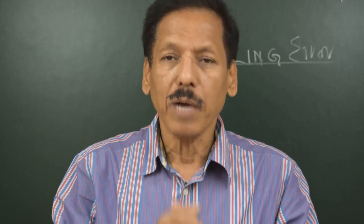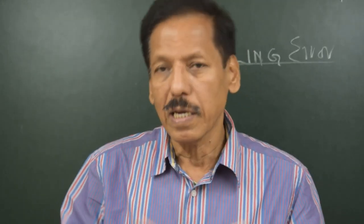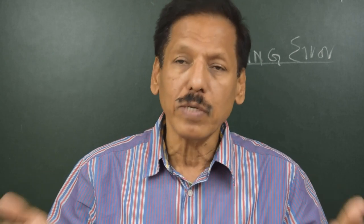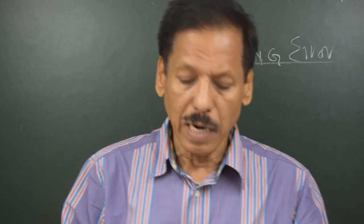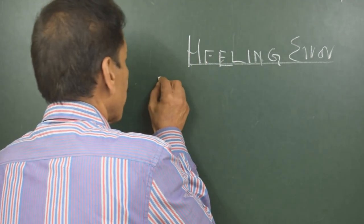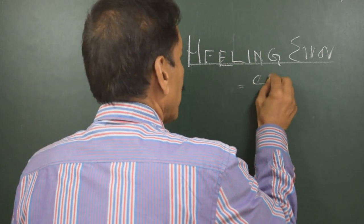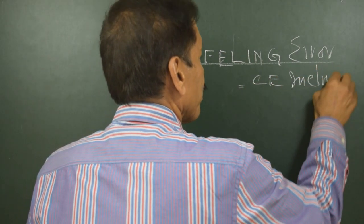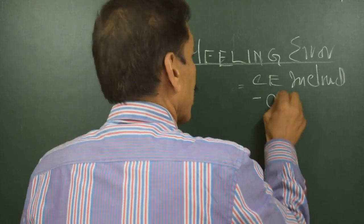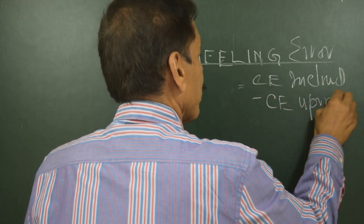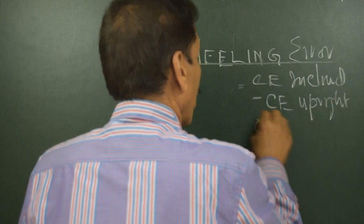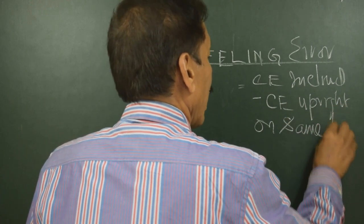Hi, this is Captain Chaudhary. Today I am going to speak about heeling error. What is heeling error? Heeling error is actually not an error. It is the difference of compass errors when the vessel is upright and the vessel is inclined. So we can mathematically say: heeling error equals compass error inclined minus compass error upright, on the same heading.